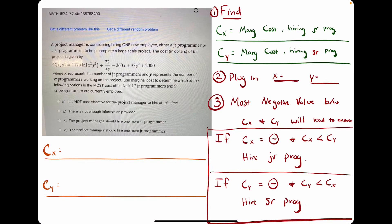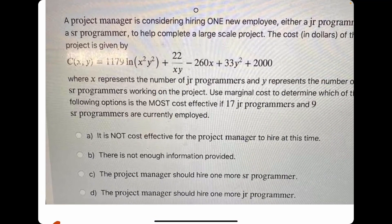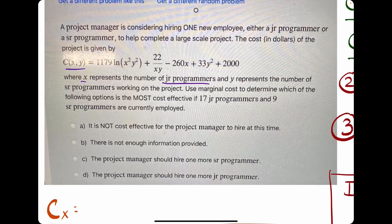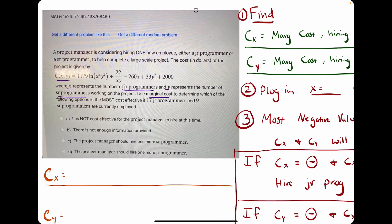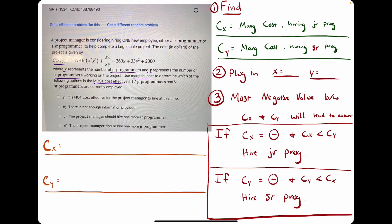Shout out to Lily for sending me this problem to work out for you all. In this problem we are given a cost function with respect to x and y, x representing the number of junior programmers, y representing the number of senior programmers. We want to know, using marginal cost, whether it's more cost effective to hire a junior programmer or a senior programmer.